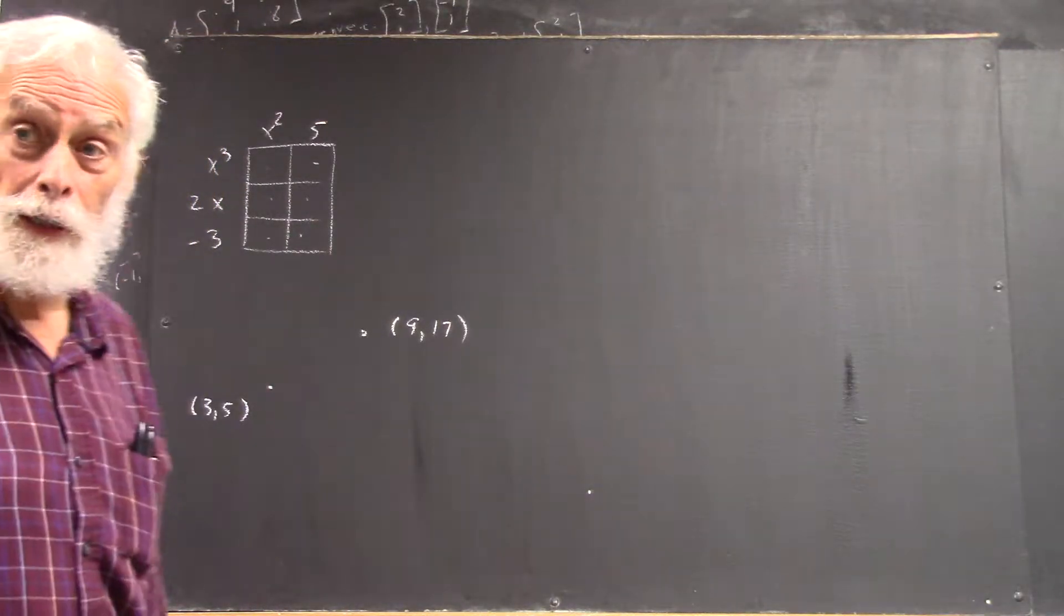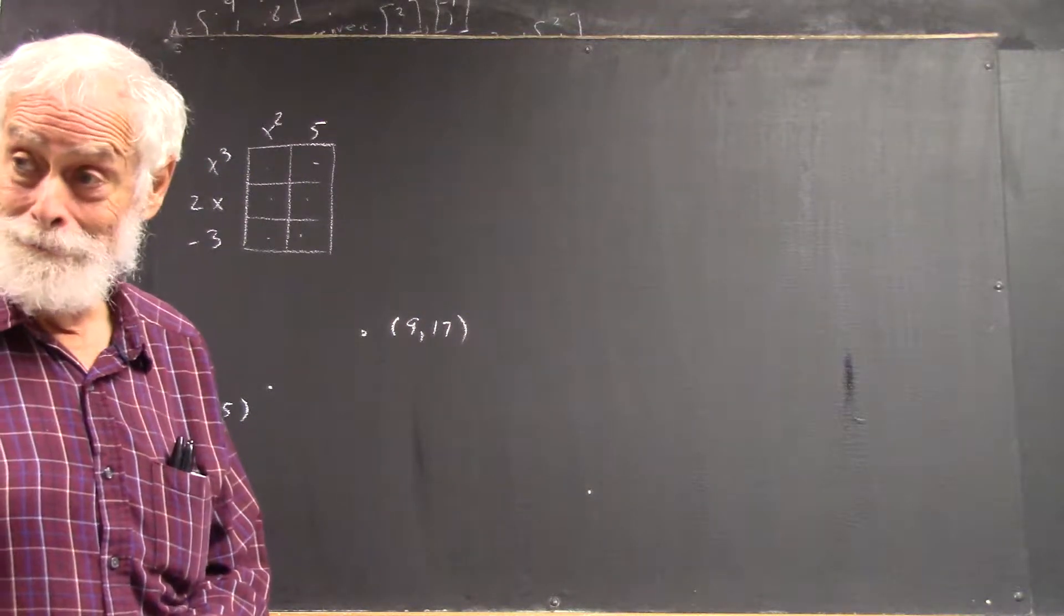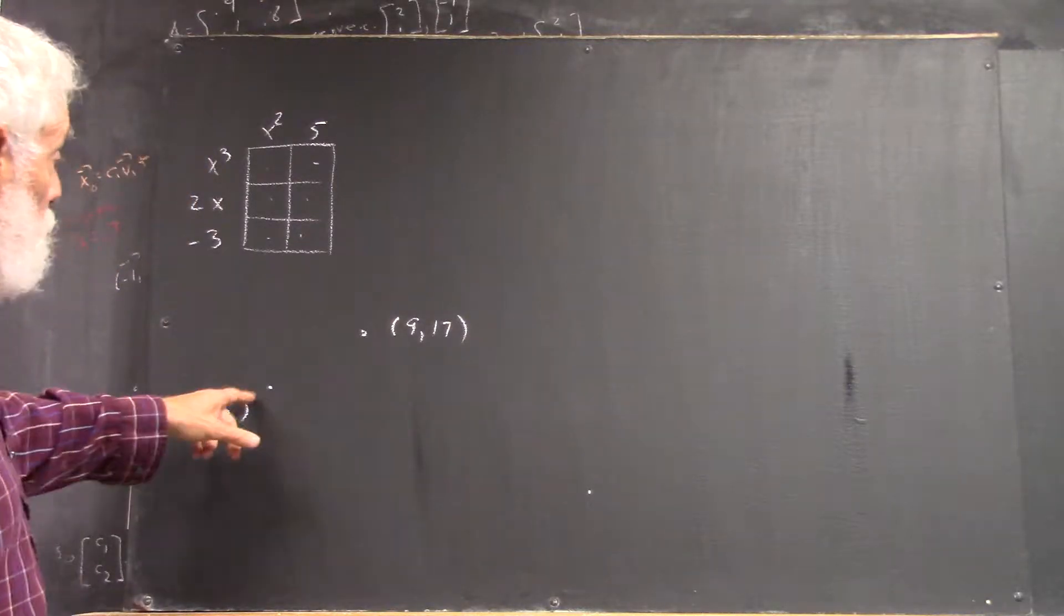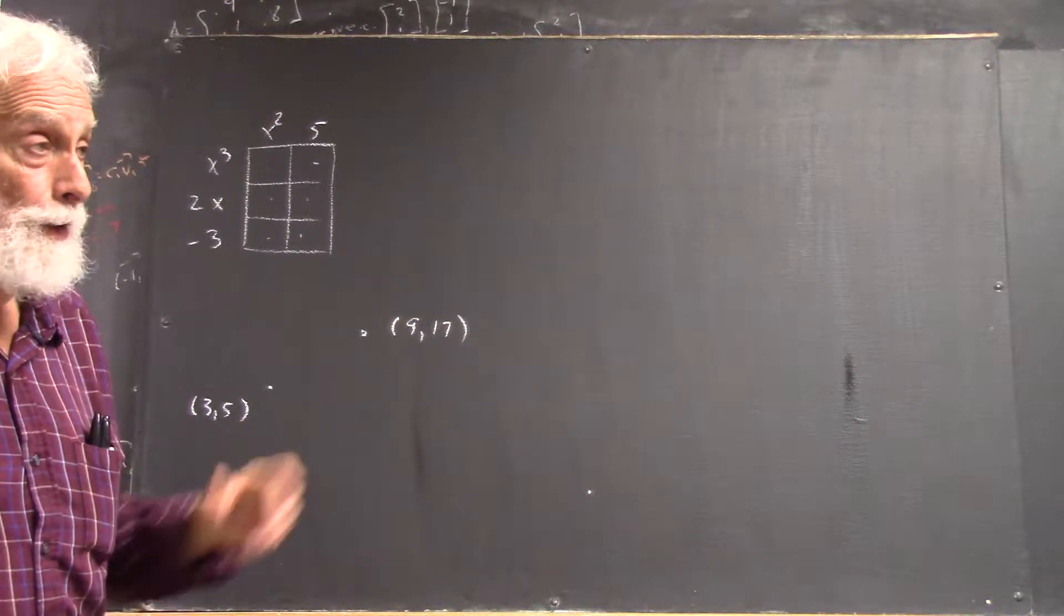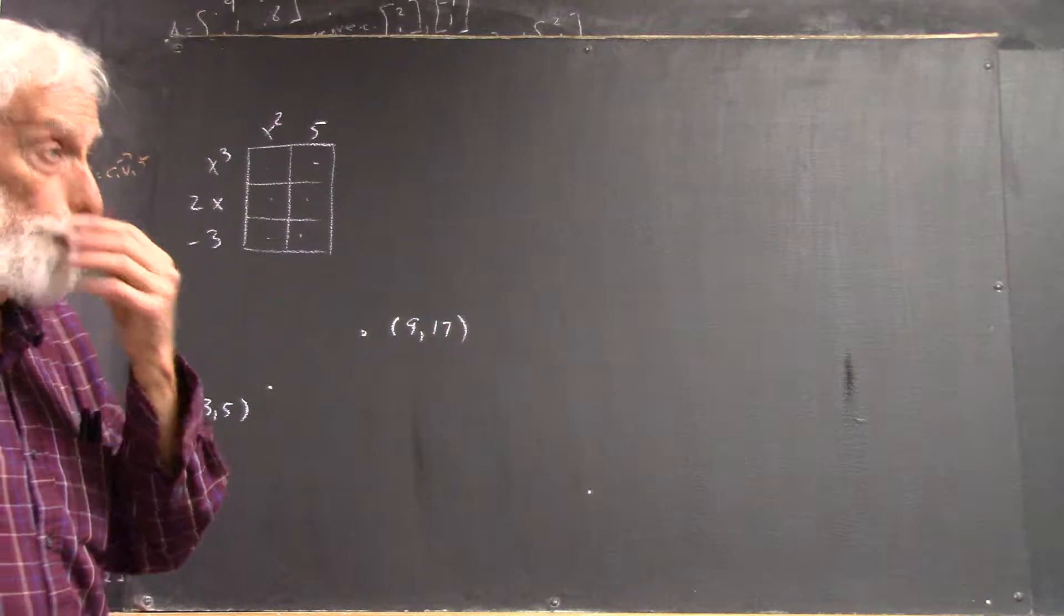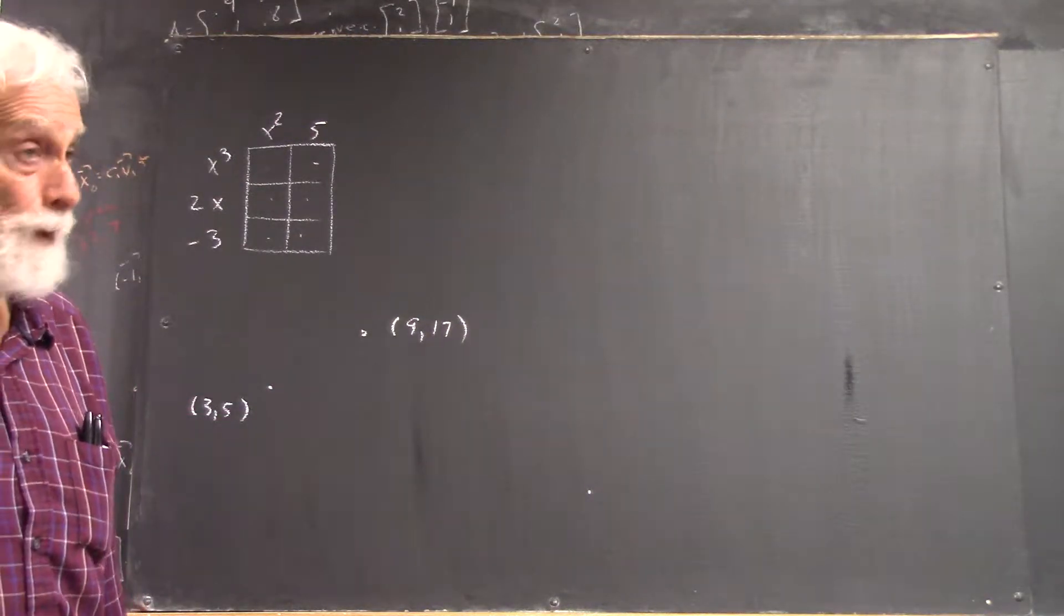The way we do straight lines in here, we do not start with y equals mx plus b. Now, what many of you are doing is you're finding the slope between these two points, right? And then you plug that in for m, and y equals mx plus b. And then you plug in the x and y coordinate of one of these and solve for b.